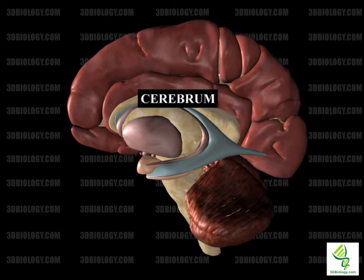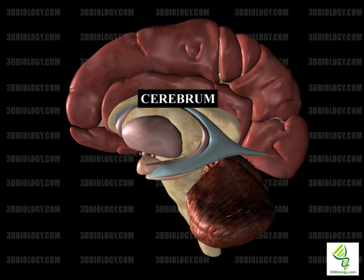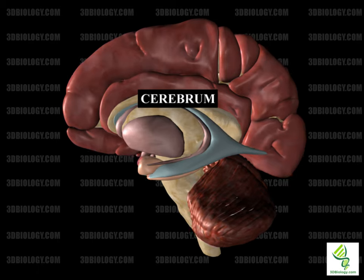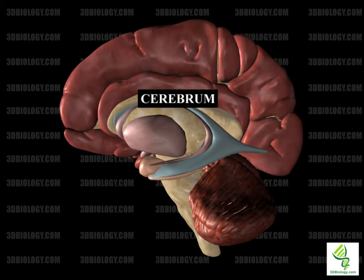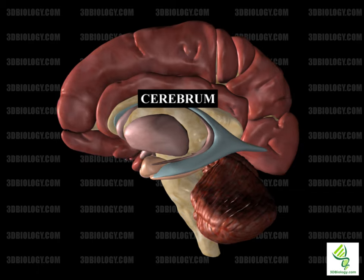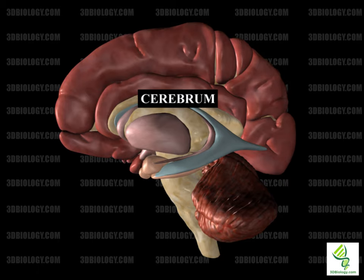The cerebrum or telencephalon is the largest part of the brain. It contains the two cerebral hemispheres made up of an outer cortex of gray matter and an inner white matter, as well as subcortical structures such as the basal ganglia, the hippocampus, and the olfactory bulb. The cerebrum is involved in voluntary motor actions, sensory perception, memory, and thoughts. The cerebrum develops from the prosencephalon.